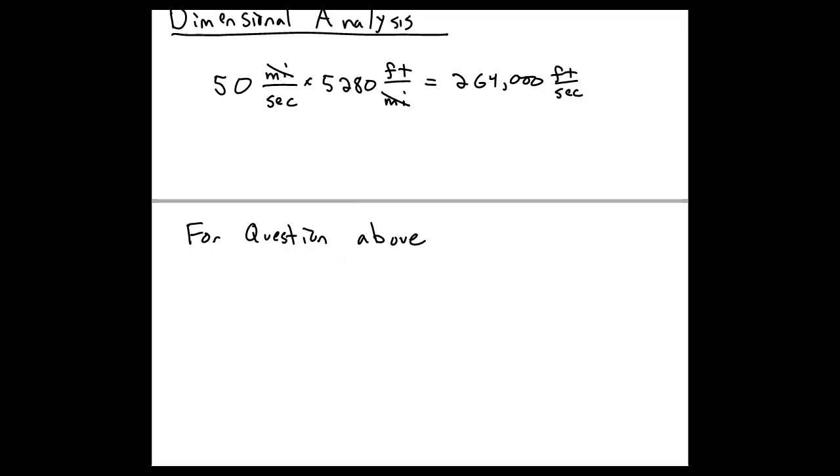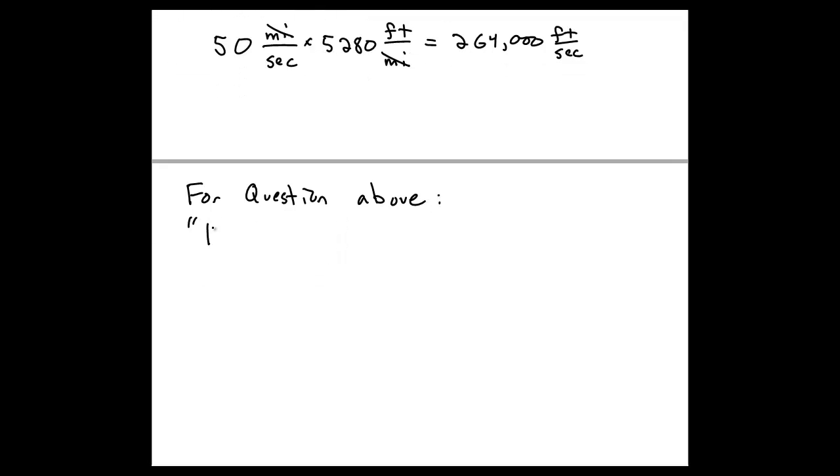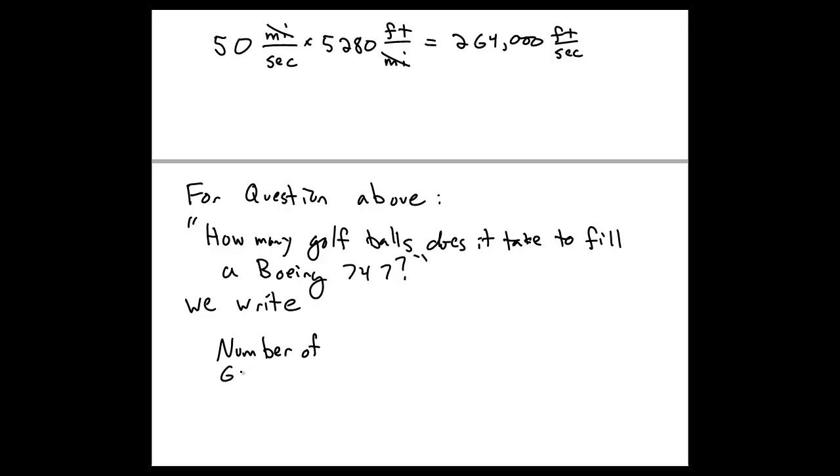So, for example, if we wanted to apply this type of reasoning to the question above, namely how many golf balls does it take to fill a Boeing 747, what we'd do is we'd use dimensional analysis to write an expression for the answer that we're interested in. And so what we're interested in is the number of golf balls. And so what we think we're going to need is write that as the volume of a 747 over the volume of a golf ball.